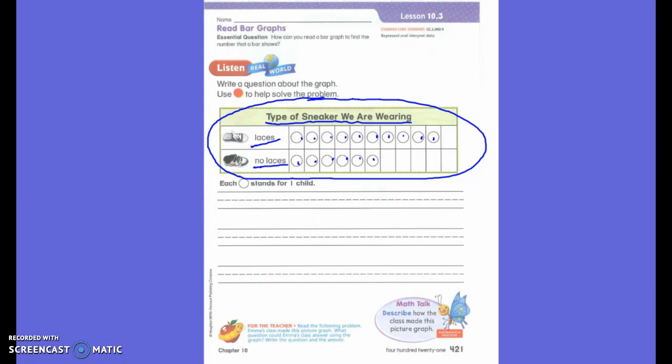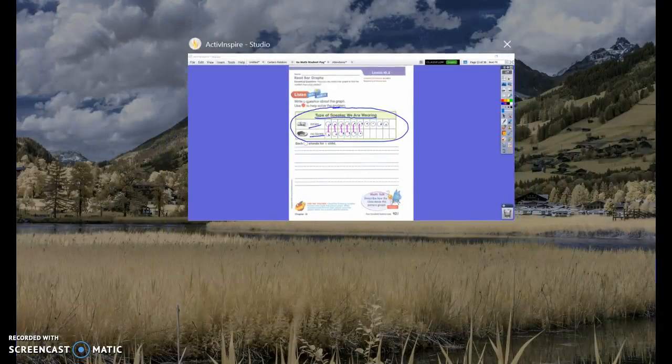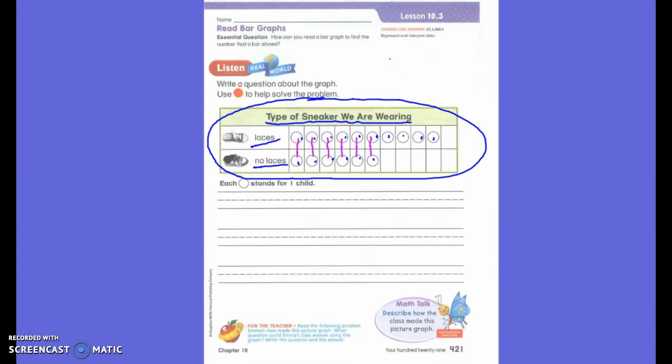I'm still looking for who does not have a partner. So if I look, these two are partners, these two are partners, these two are partners, all of these are partners. Now how many doesn't have partners? Four. So there are four fewer laces than no laces. I can answer that question. So there are four more laces than no laces.